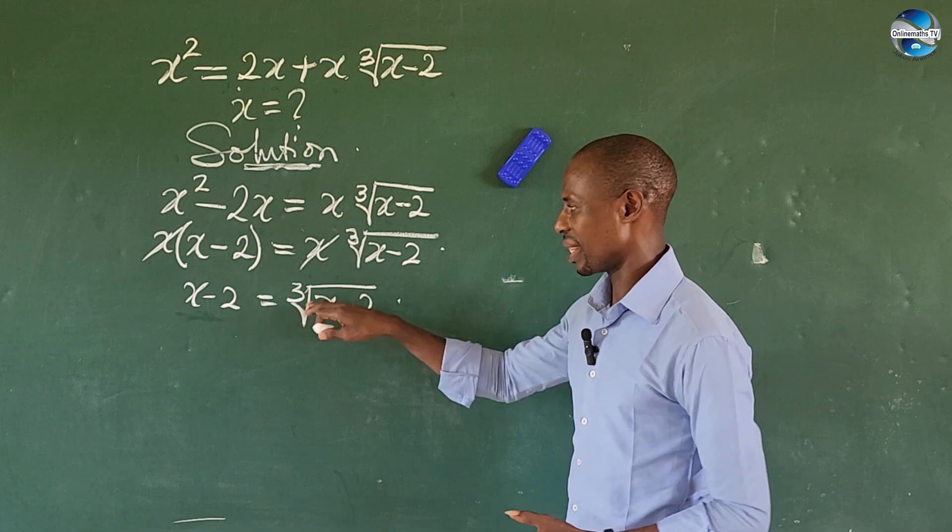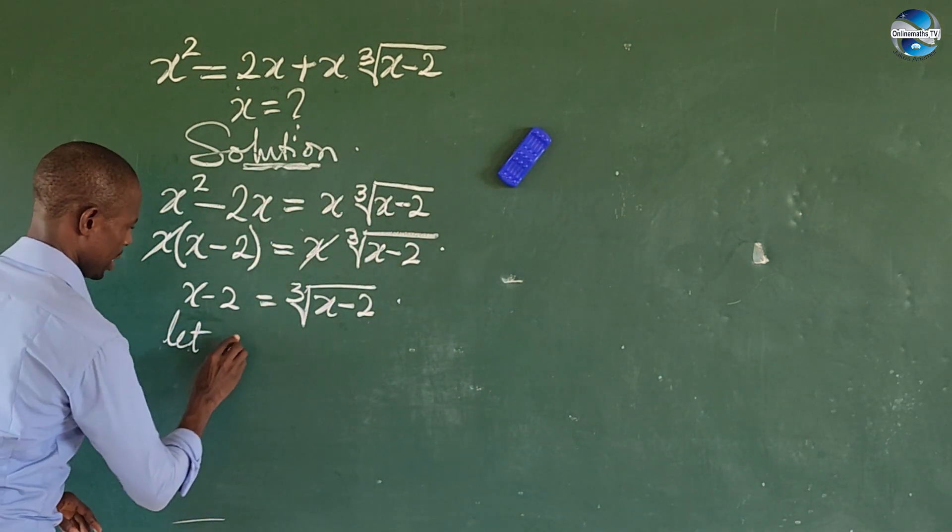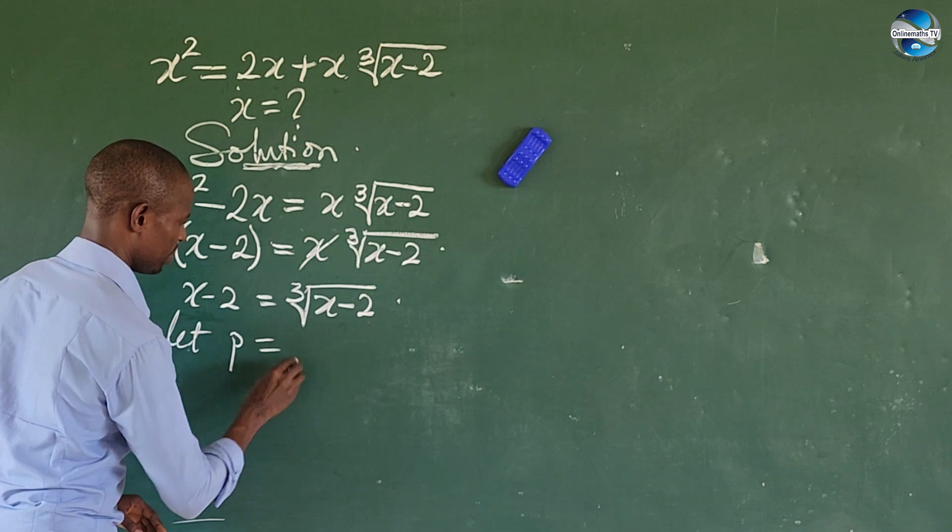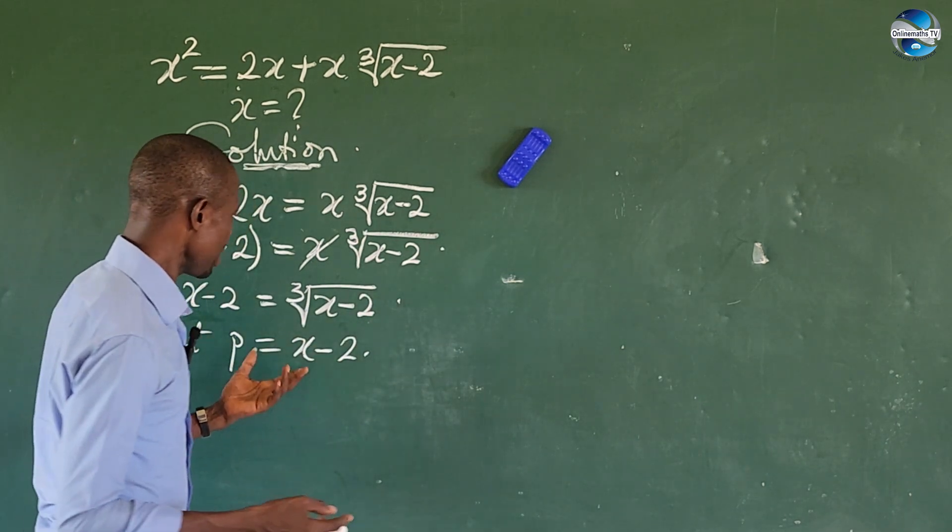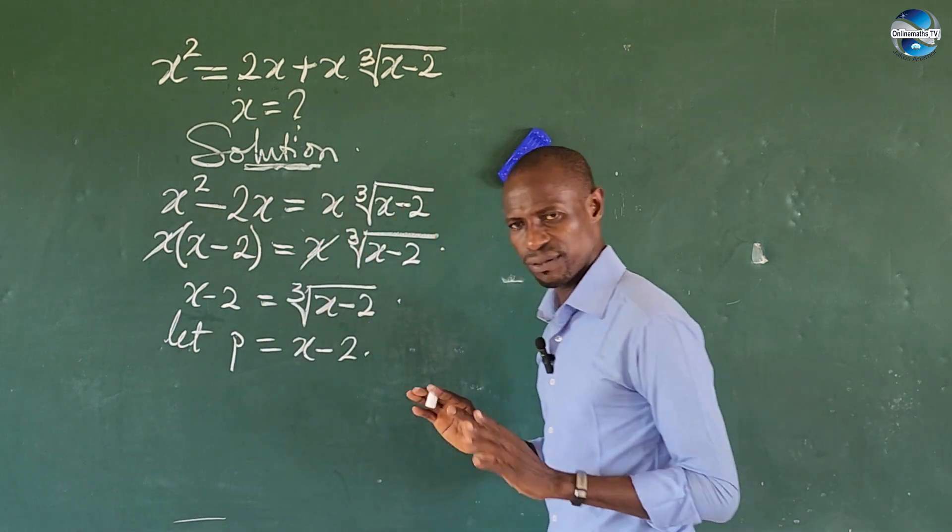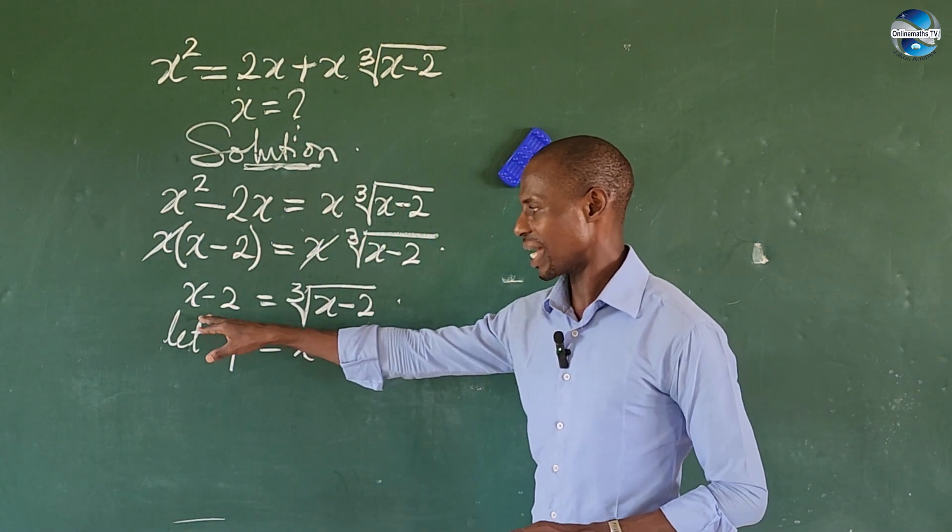We bring in another alphabet or another quantity to represent this. Let p be equal to x minus 2. We can equally solve this straightforward by taking the cube of both sides to eliminate this radical.